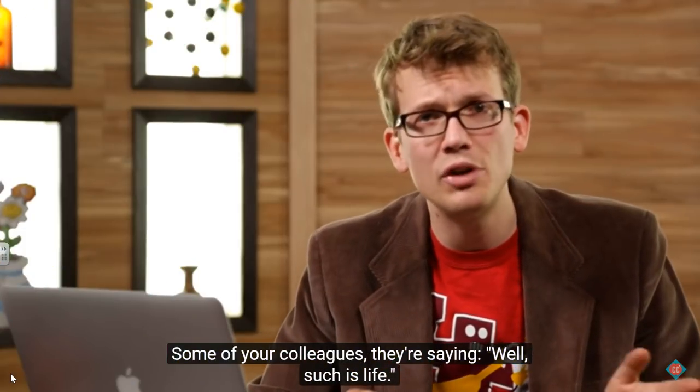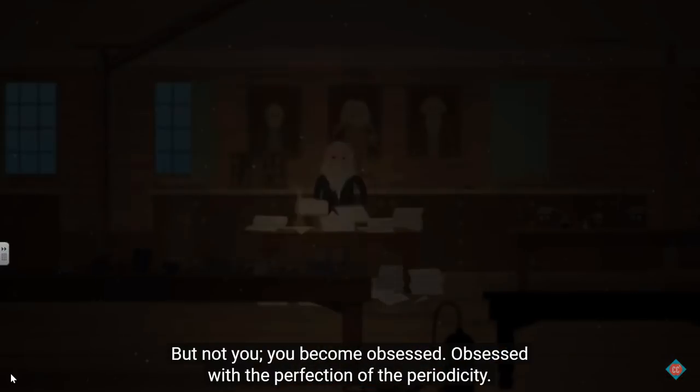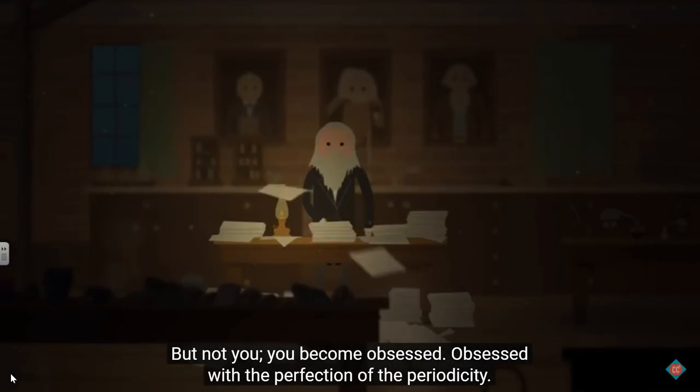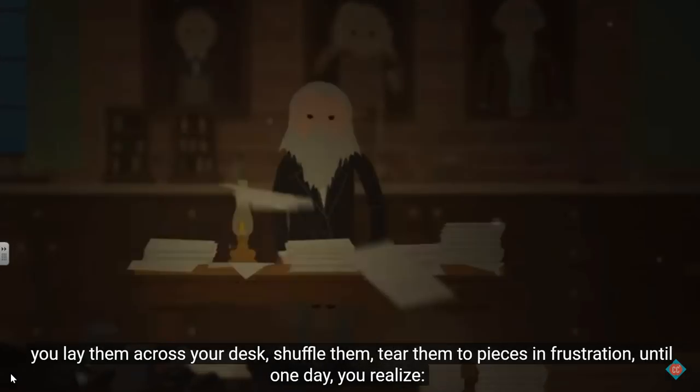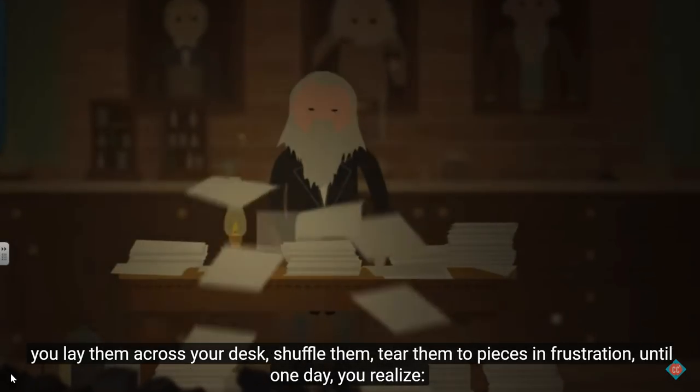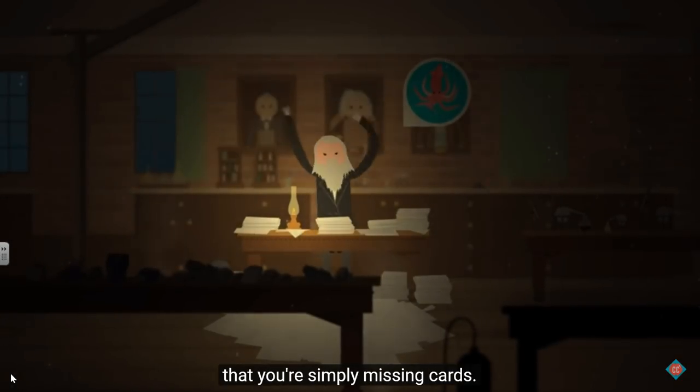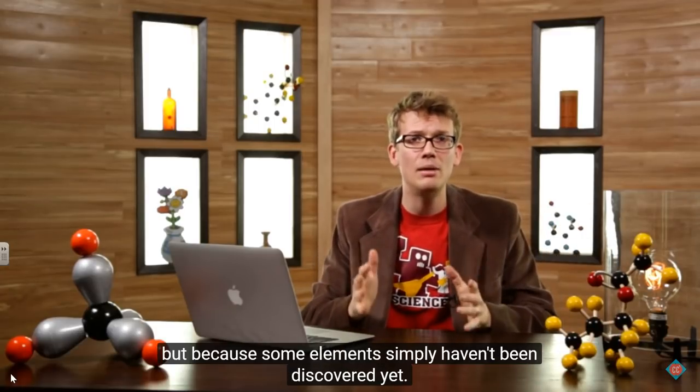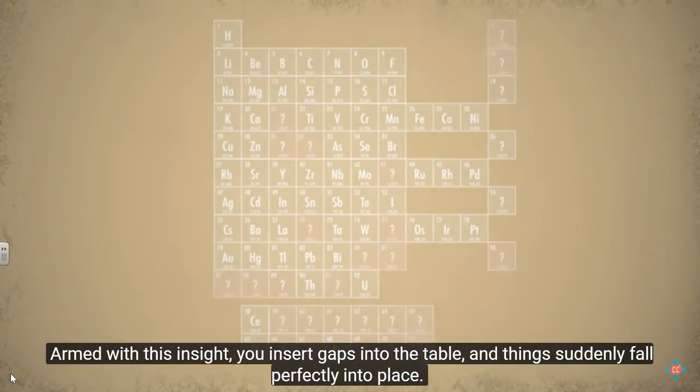Some of your colleagues, they're saying, well, such is life. It was perfect repetition early on, but later in the list it gets a little fuzzier. But not you. You become obsessed. Obsessed with the perfection of the periodicity. You write out the names and weights and properties of elements on cards, you lay them across your desk, shuffle them, tear them to pieces in frustration, until one day you realize that you're simply missing cards. The numbers aren't working, not because there's something wrong with your ideas, but because some elements simply haven't been discovered yet. Armed with this insight, you insert gaps into the table, and things suddenly fall perfectly into place.